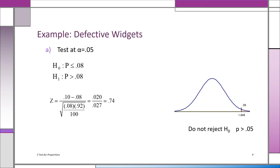We convert the sample evidence into a z-score: 0.10 minus 0.08 over the square root of 0.08 times 0.92 over 100. That gives 0.020 over 0.027, or 0.74. Notice it's not in the rejection region — there would have to be more than 1.645. So we don't reject HO because the probability of getting this sample evidence is more than 5%. The conclusion is that maybe the claim is accurate and we're just looking at sampling error — 10 is not enough of a deviation from 8%.